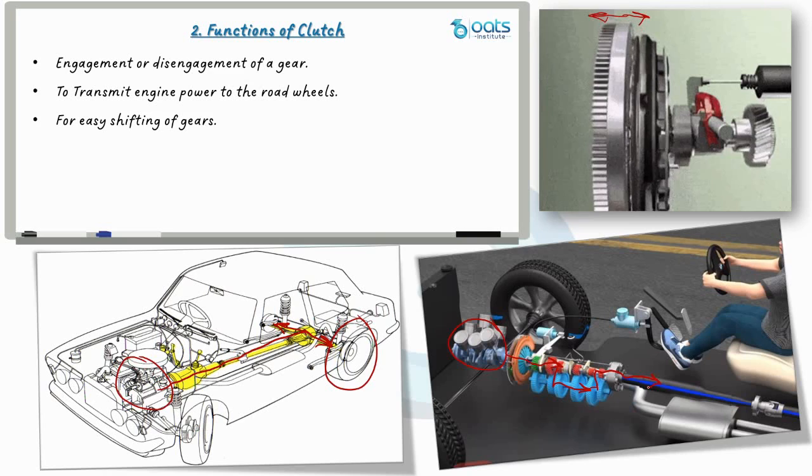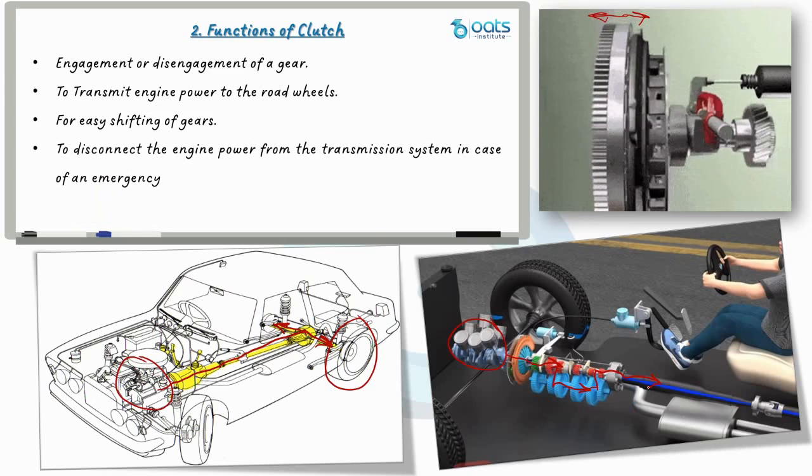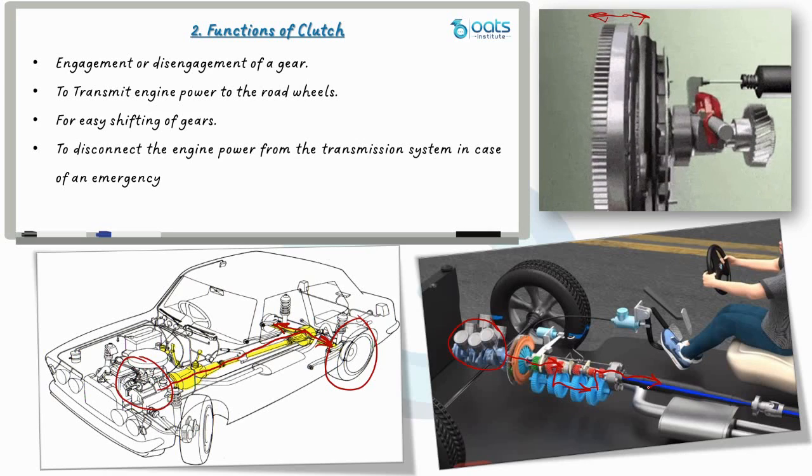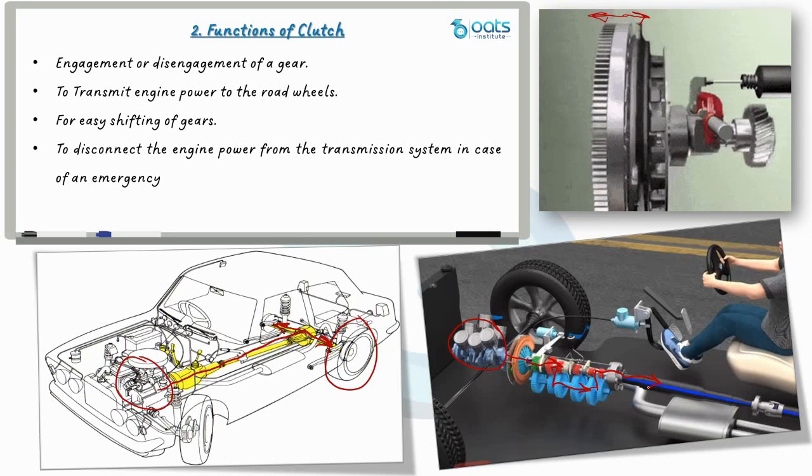In emergencies, such as when we need to stop the vehicle abruptly after applying the brakes, the clutch swiftly disconnects the engine power from the transmission system. This feature ensures the safety and control of the vehicle during critical situations.